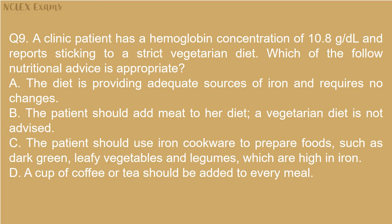Question 9: A clinic patient has a hemoglobin concentration of 10.8 grams per deciliter and reports sticking to a strict vegetarian diet. Which of the following nutritional advice is appropriate? A. The diet is providing adequate sources of iron and requires no changes. B. The patient should add meat to her diet — a vegetarian diet is not advised. C. The patient should use iron cookware to prepare foods such as dark green leafy vegetables and legumes, which are high in iron. D. A cup of coffee or tea should be added to every meal.